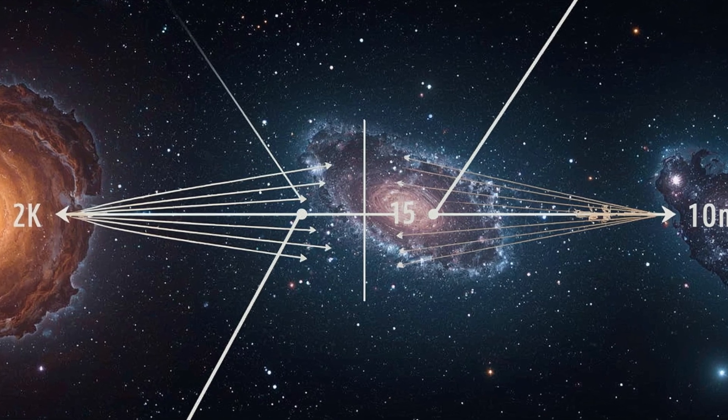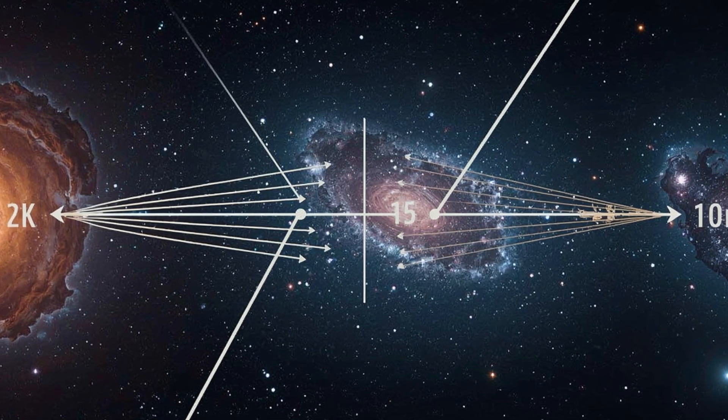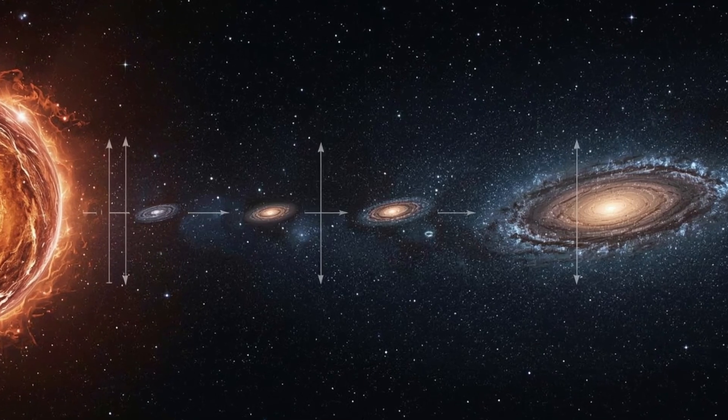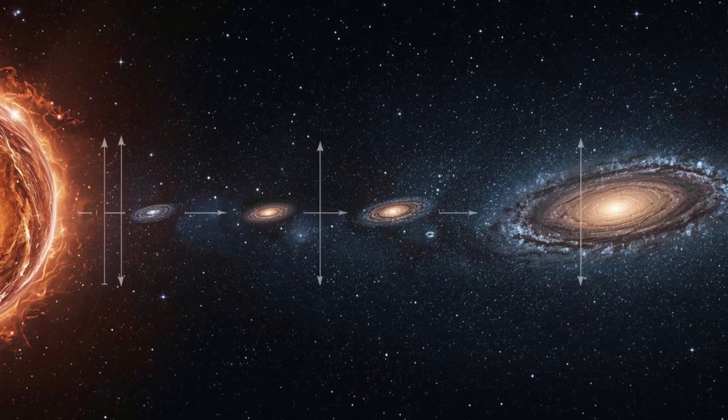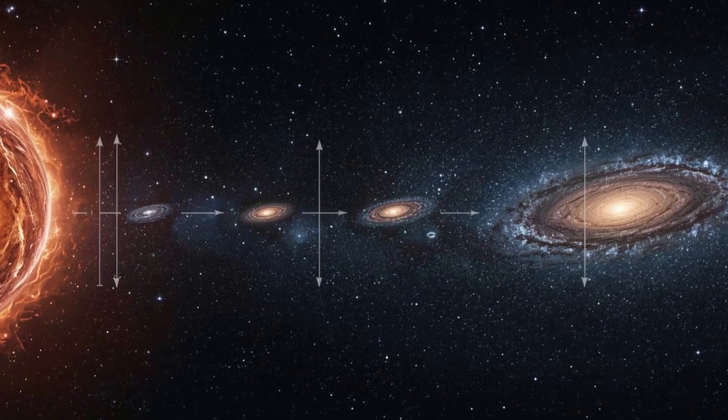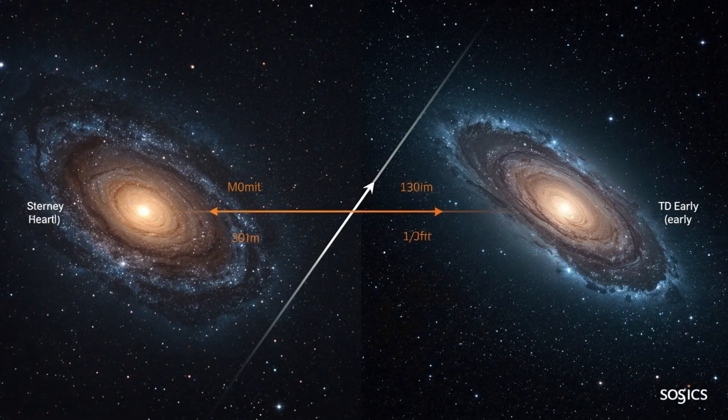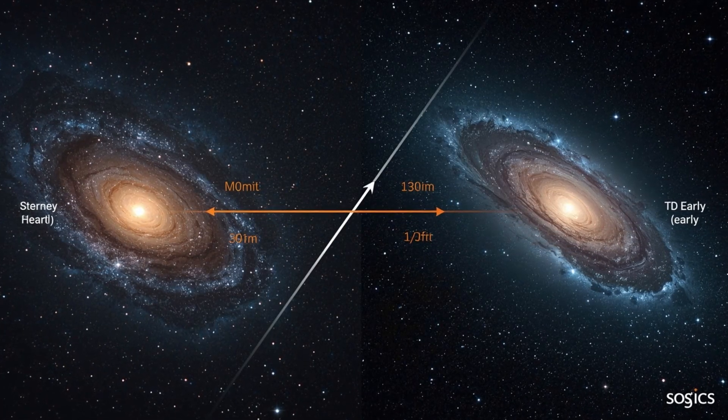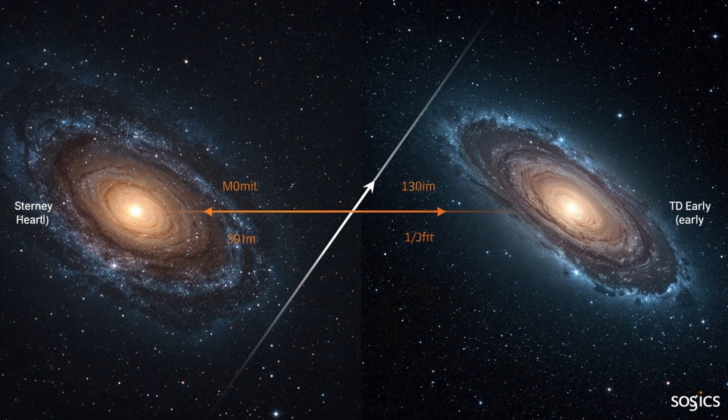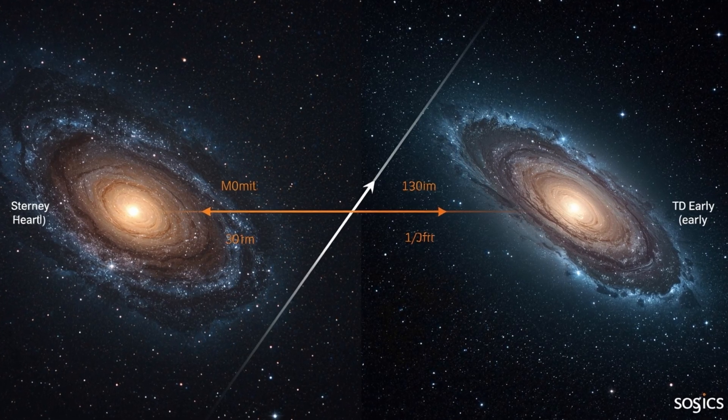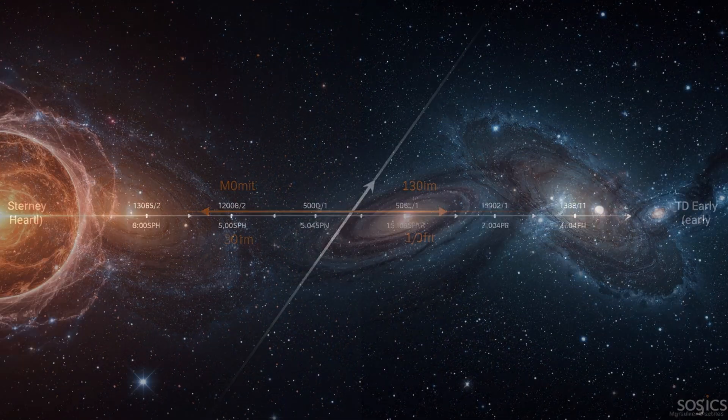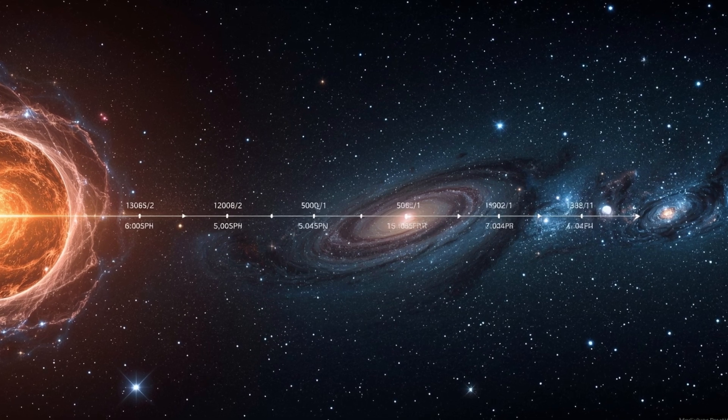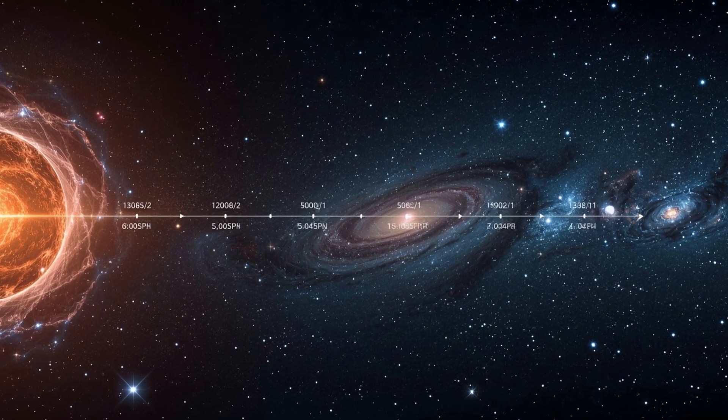Now, before you think this is just a minor scientific adjustment, let's take a step back and consider the implications. If these galaxies truly existed when the universe was less than 5% of its current age, then our understanding of how everything developed might be fundamentally wrong. The entire timeline that tracks how the universe evolved, starting from the Big Bang to the galaxies, stars and planets around us, might need to be stretched, shortened or even replaced.